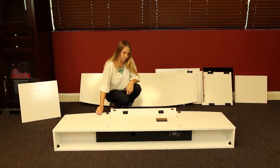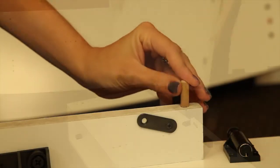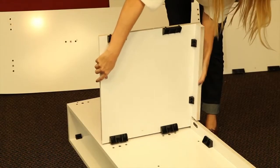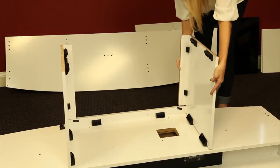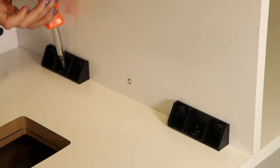Insert the supplied dowels into the holes as shown. Install the left and right center shelf panels, making sure the connectors fit into their appropriate holes. Use the included bolts to fasten the panels to the top assembly.